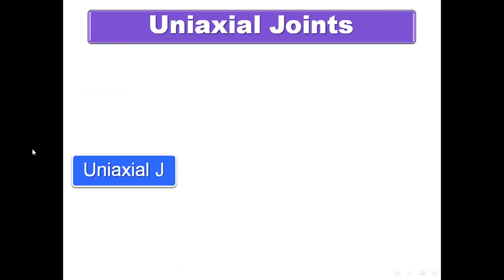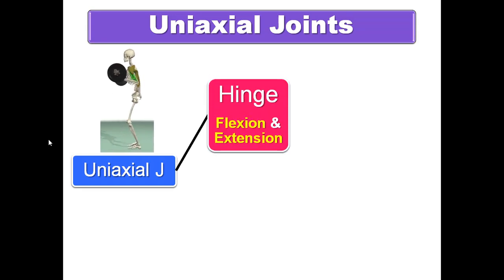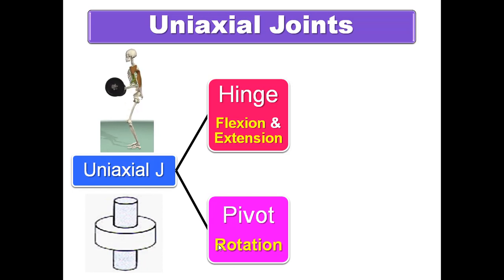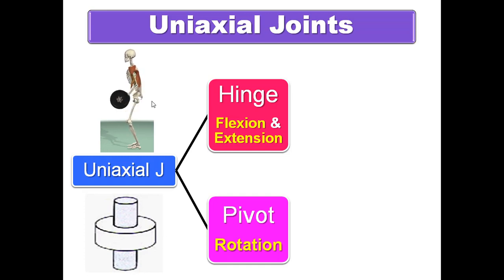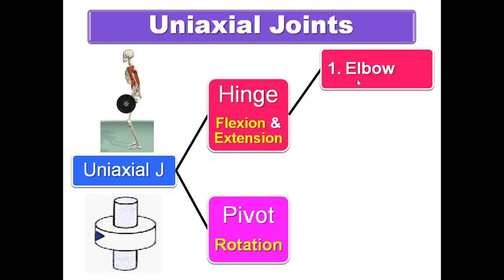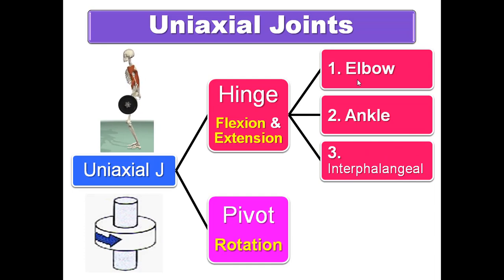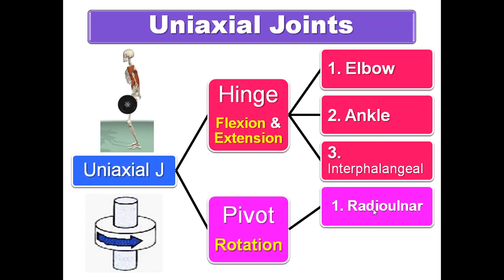Uniaxial joints: movement occurs around one axis, which may be horizontal or longitudinal. Hinge joints move along a horizontal axis — the movement is flexion and extension. Examples include the elbow joint, ankle joint, and interphalangeal joints. Pivot joints involve rotation around a longitudinal axis — examples include the radio-ulnar joint and the atlanto-axial joint.